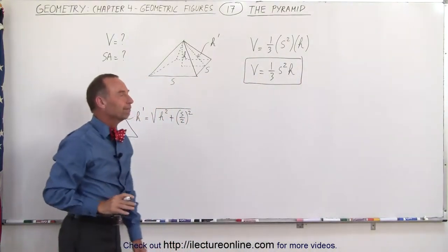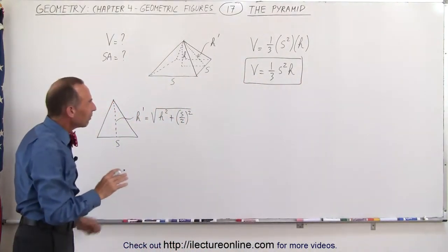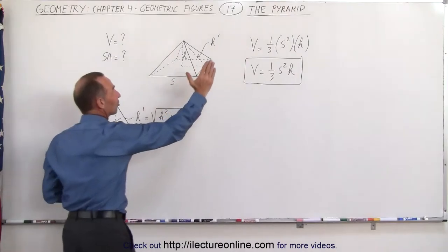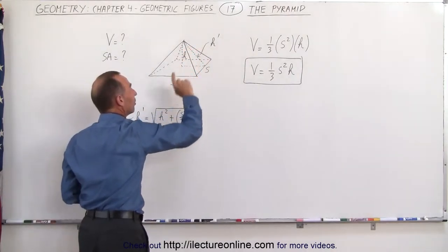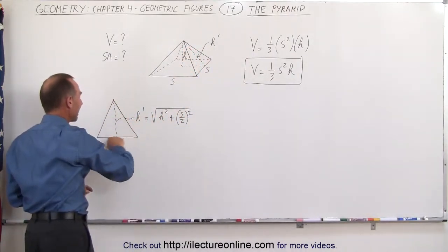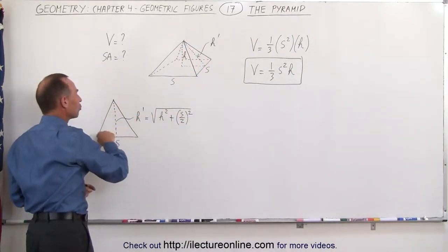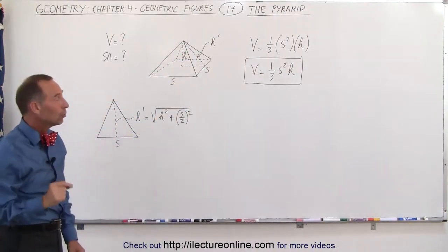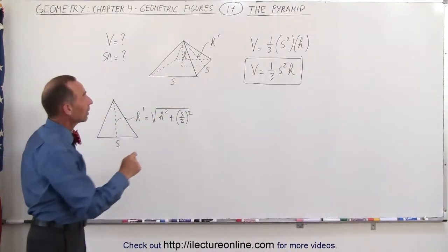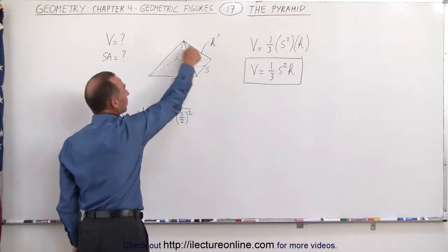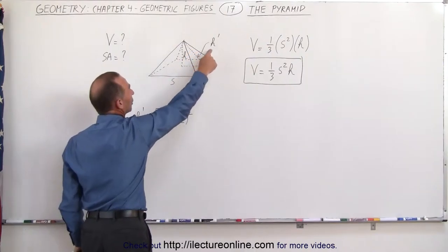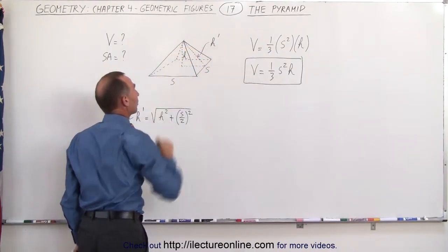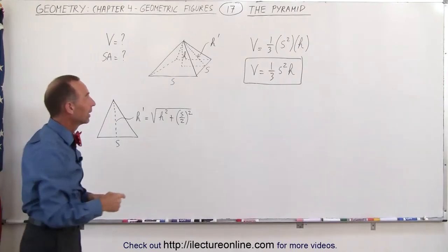But what about the surface area? That's a little bit more tricky because the sides are slanted. So what we need to do is find the area of the triangle made by the side. To do that, you have to realize that the height of each triangle — I call it h prime — is not the height of the actual pyramid. It's longer.